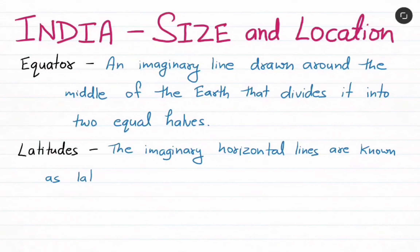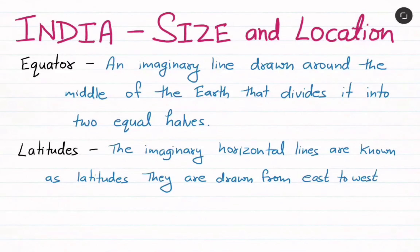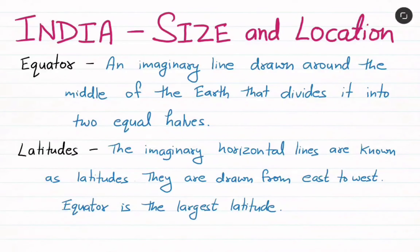Next, latitudes. The imaginary horizontal lines are known as latitudes. They are drawn from East to West. Latitude is an imaginary horizontal line drawn from East to West, and the Equator is the largest latitude.